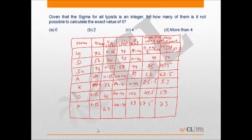Therefore, the number of lines Kapil could have typed ranges between 0 and 55. The same applies for Deepak and Kandar. Similarly, we can find these figures for day 2, day 3, and day 4.